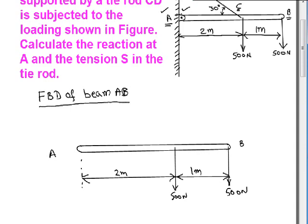At point C on the beam, a force exists due to the presence of the tie rod, and this force is what we call S. At the hinge at A, there are two reaction forces: a horizontal component which we call XA to indicate the x component of reaction at A, and a vertical component which we call YA, the y component of reaction at A.